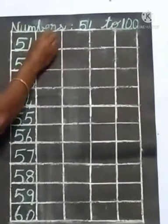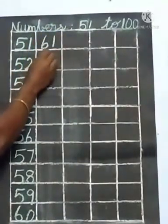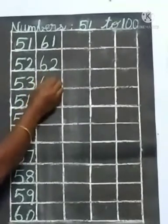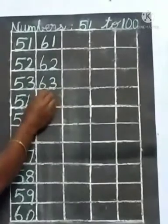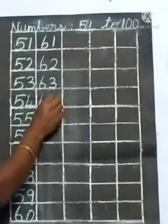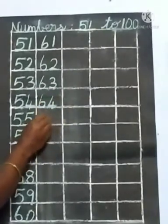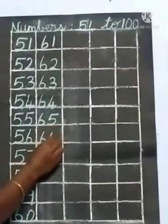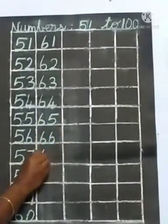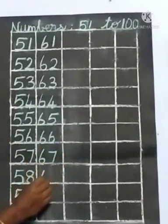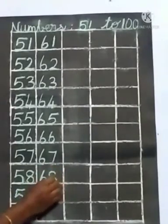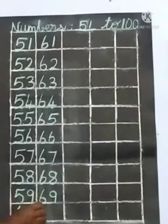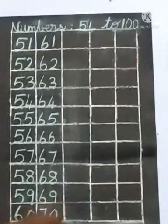Next line. 61, 62, 63, 64. 64 after 6, 5, 65. 65 after 6, 6, 66. 66 after 6, 7, 67. 67 after 6, 8, 68. 68 after 6, 9, 69. 69 after 7, 0, 70.